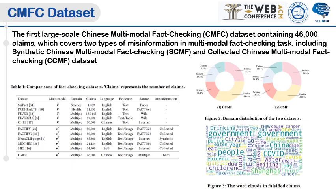As shown in Figure 2, more than 30% of the claims in both datasets belong to the health domain. The political domain accounts for the second,